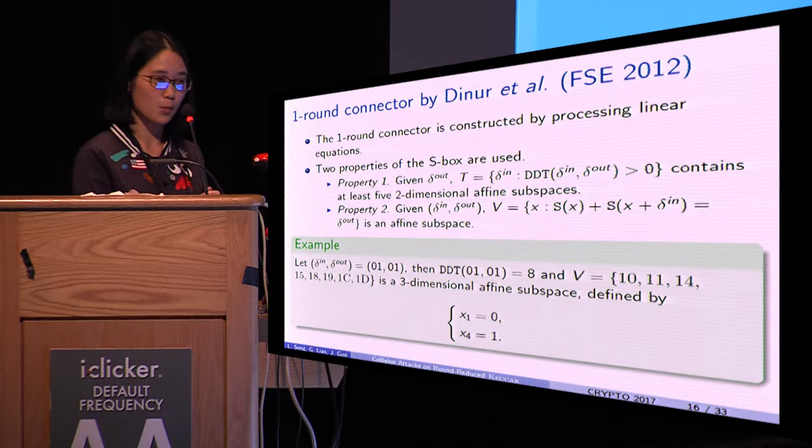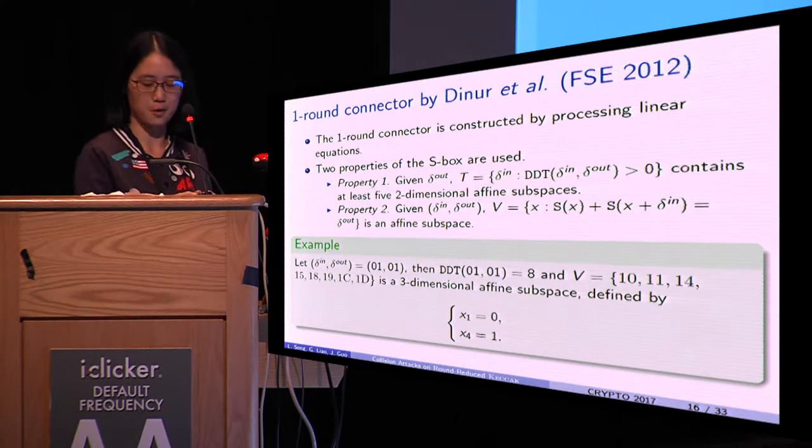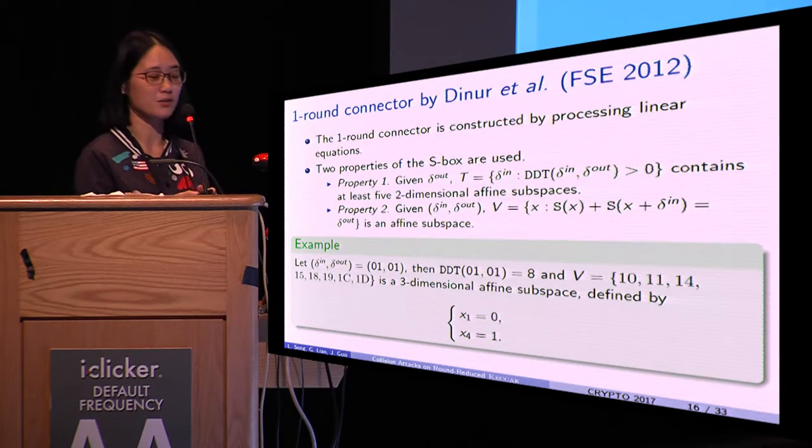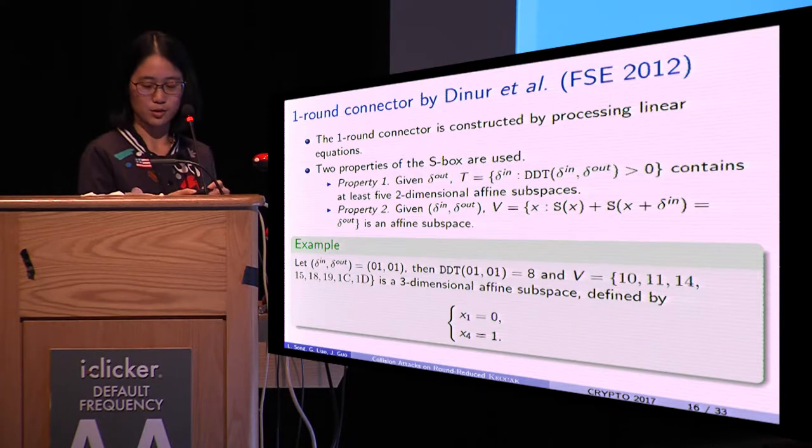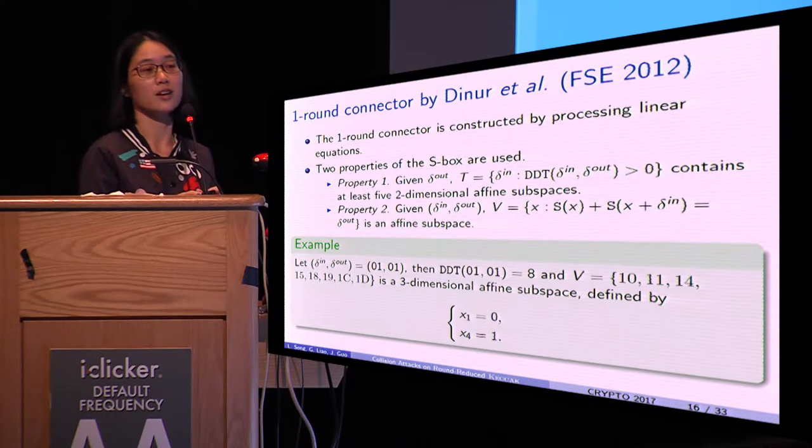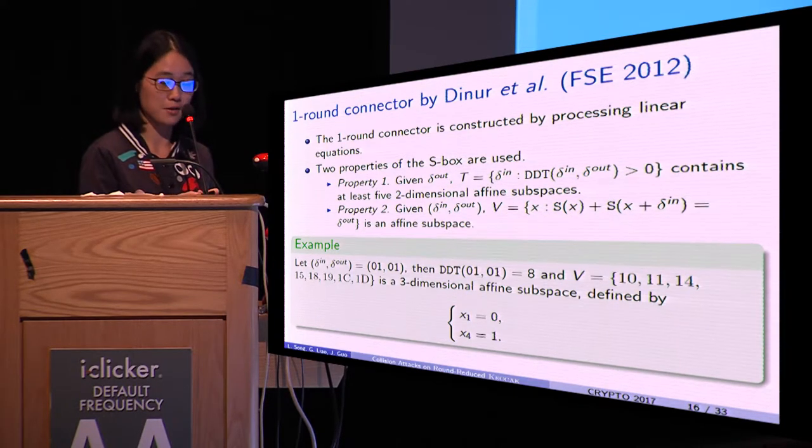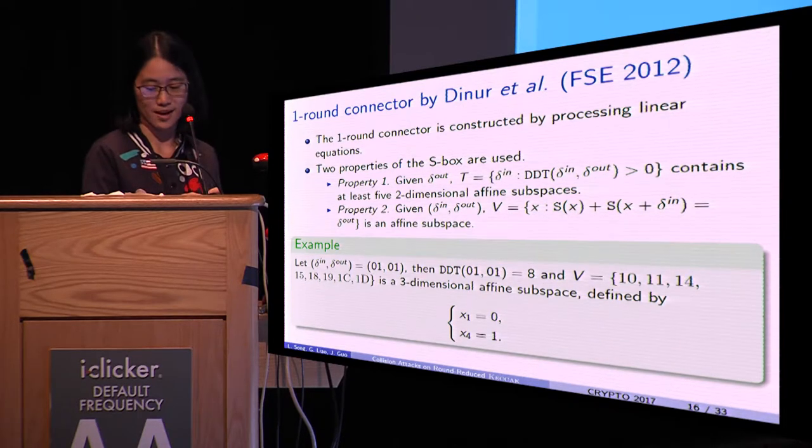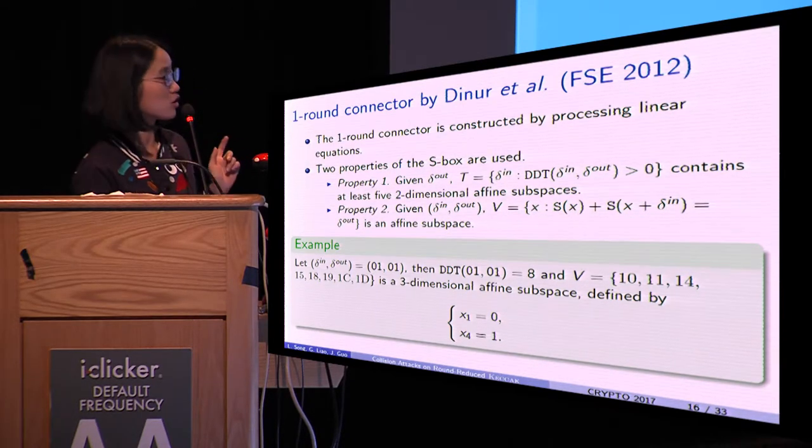Suppose both the input-output differences are (0,1). Then the DDT entry is 8. The solution set V forms a three-dimensional affine subspace, which can be defined by these two equations.